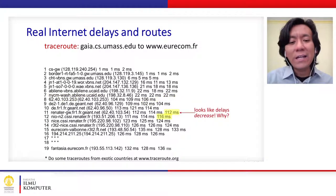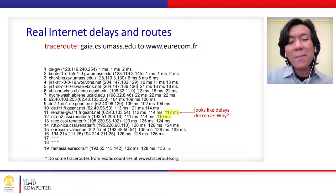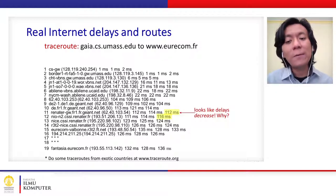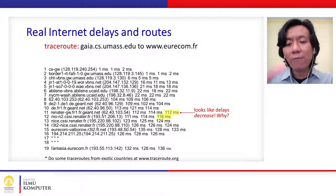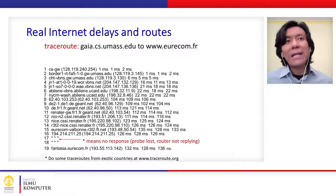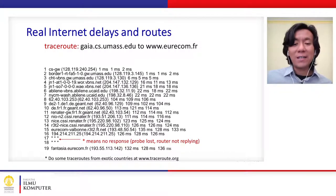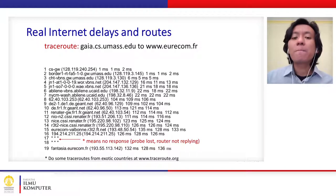Interestingly, at hops 12 and 13, the delay appears to decrease — this is because both routers are already located in France (you can see the .fr domain). They are probably in the same geographical area. At hops 17 and 18, there are stars (***), meaning those routers did not respond to the Traceroute program at all. These are the actual measured delays across the internet.